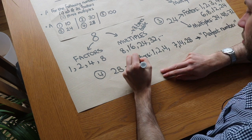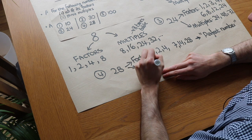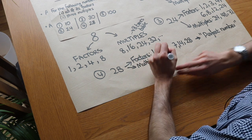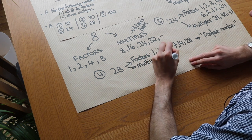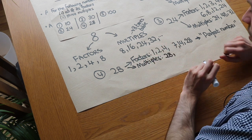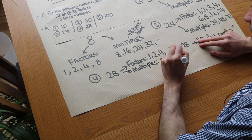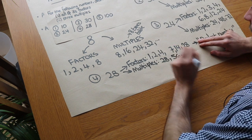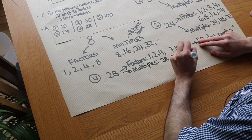And for multiples of 28, we just need the 28 times table: 28 times 1 is 28, 28 times 2 is 56, and 28 times 3 is 84.